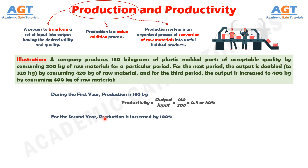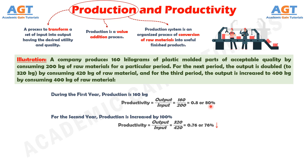For the second year, production has doubled and increased from 160 kg to 320 kg, so production has increased by 100%. The productivity for the second year is obtained by dividing the output of 320 kg by the input of 420 kg, which gives a productivity of 0.76, or 76%. So, even though production has increased by 100%, productivity has reduced from 80% to 76%.